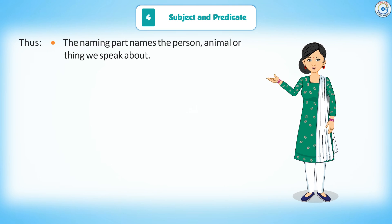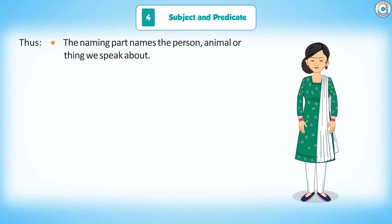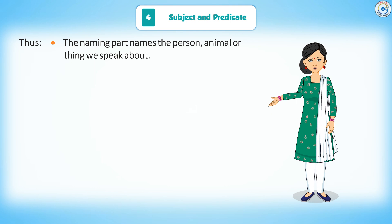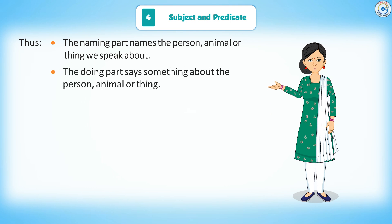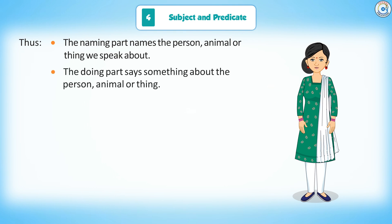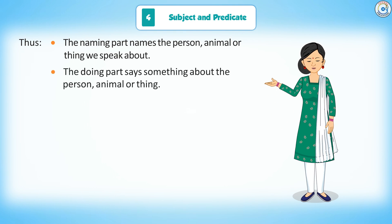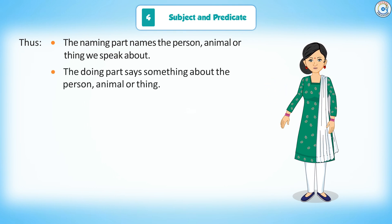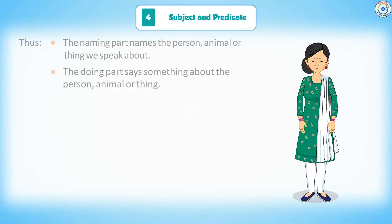Thus, the naming part names the person, animal, or thing we speak about. The doing part says something about the person, animal, or thing.